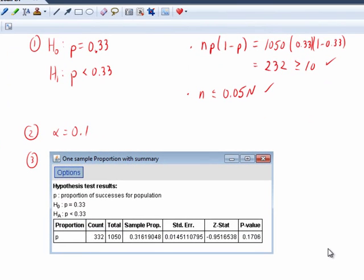So, here we're getting a P value of 0.1706. And here is our sample proportion. It was 0.316. The question we're really asking ourselves is how likely is it to get a sample proportion of 0.316 or less if the population proportion is 0.33? Put another way, how likely is it to get 332 or fewer families that eat together out of 1,050 if the true population proportion is 0.33?